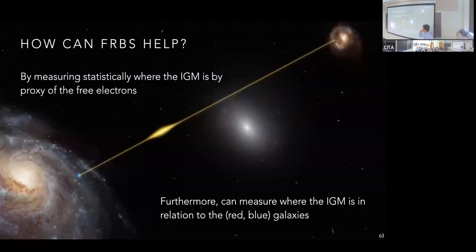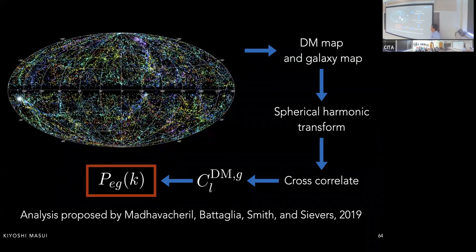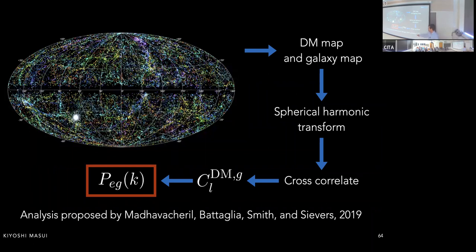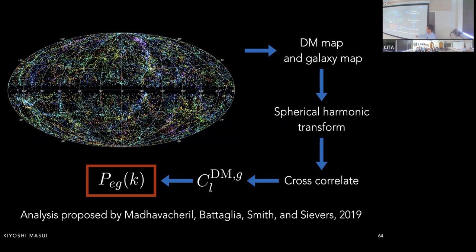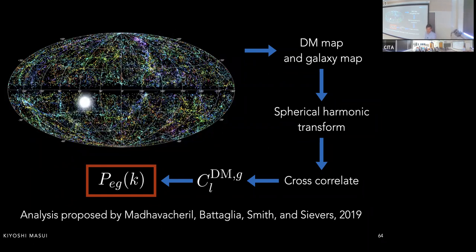This is the missing baryon problem: the IGM contains all the baryons in the universe but they can't be easily observed or reliably simulated. FRBs can help by statistically measuring where the IGM is via free electrons. Furthermore, we can measure where the IGM is in relation to red and blue galaxies. The approach: get a DM map from background FRBs and a galaxy map from foreground galaxies, cross-correlate them in spherical harmonics to measure C_l^{DM-g}, which transforms to the cross-power spectrum P_{eg} between free electrons and galaxies — encoding the intermediate-scale baryon statistics and therefore feedback.